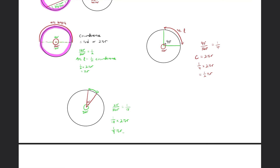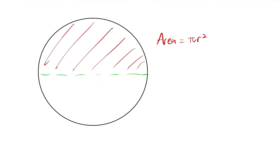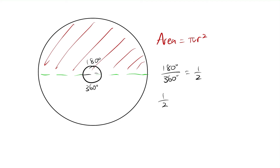So that's arc length. Now let's cover area. Same logic as before — I'm going to do it with a semicircle. The area of a circle is πr². If I split the circle into two semicircles, the ratio is 180 over 360, which is one half. So the area of the top semicircle is one half of the complete circle area, which is one half times πr², giving us one half πr².